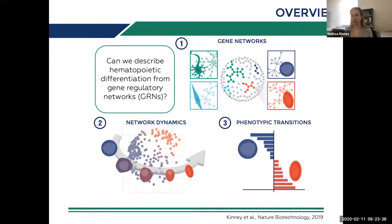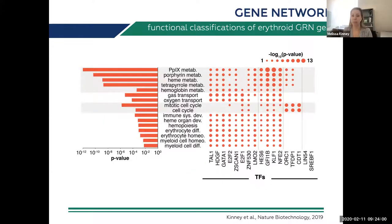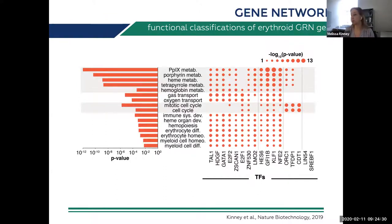We retrained the algorithm adding in red blood cells — erythroid cells — and pulled out a gene regulatory network specific to red blood cells. This network had 17 transcription factors, many well-characterized in red blood cells, and gene ontology terms including hemoglobin metabolism, oxygen transport, and immune-related biological processes. So it did pull out a cohesive sub-network with a lot of agreement with what we already know about red blood cells.